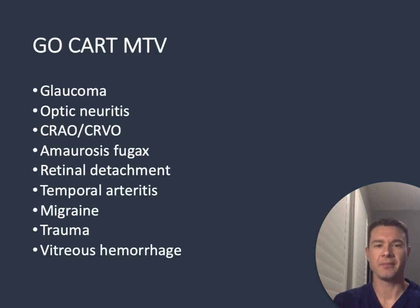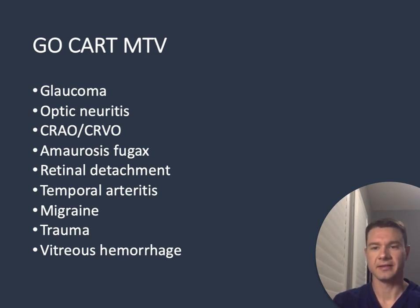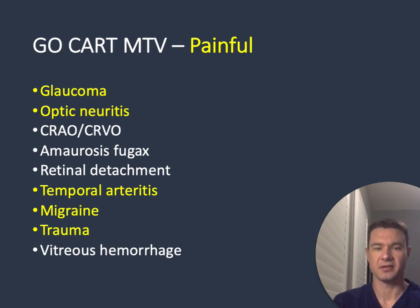A way to remember all the potential causes of monocular vision loss is the mnemonic GO-CART-MTV. This stands for glaucoma, optic neuritis, central retinal artery occlusion, central retinal vein occlusion, amaurosis fugax, retinal detachment, temporal arteritis, migraine, trauma, and vitreous hemorrhage. Of this list, the five highlighted in yellow are the painful causes of vision loss, while those remaining in white are painless causes.